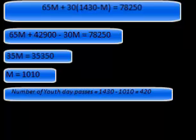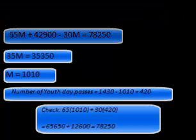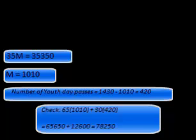It's time to check this. So, 65 times 1,010 plus 30 times 420 gives us 65,650 plus 12,600, for a total of $78,250. We've got the right answer. It's time to write our concluding statement.